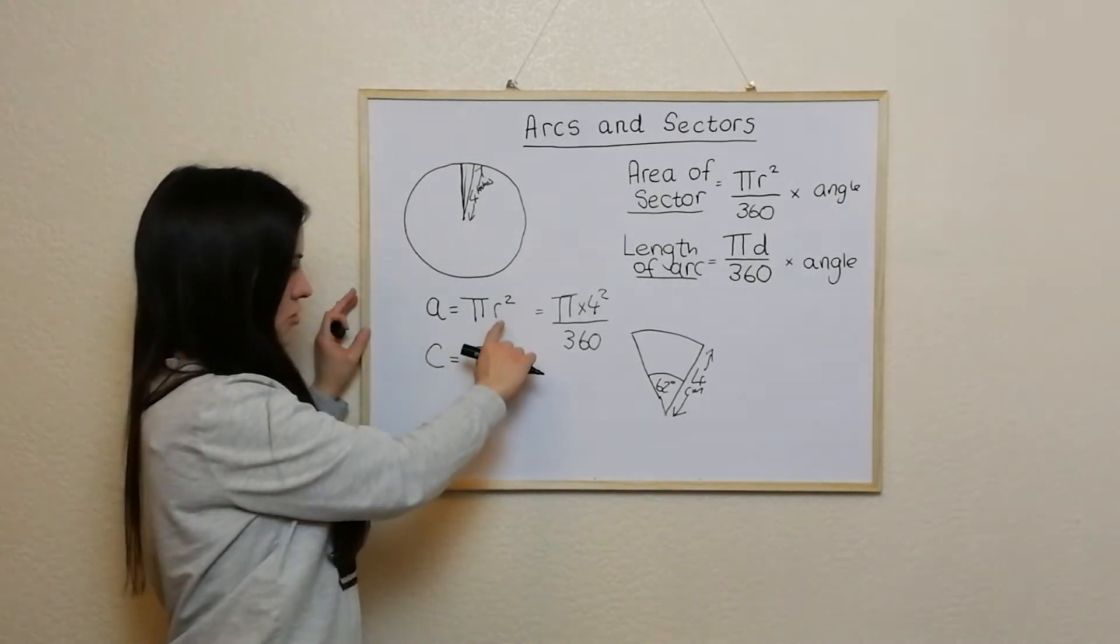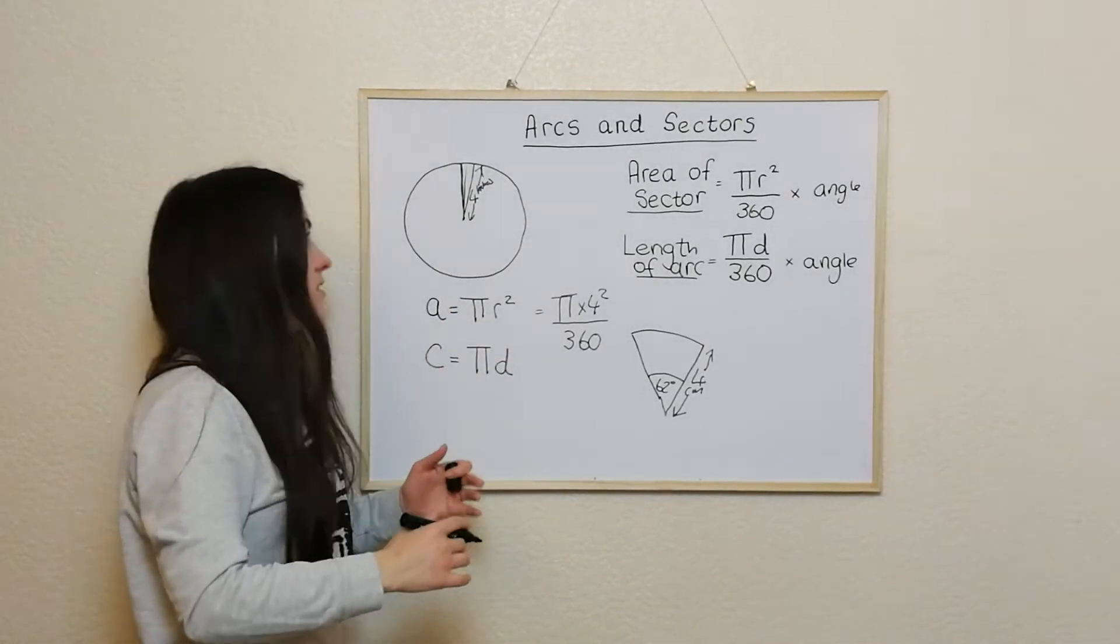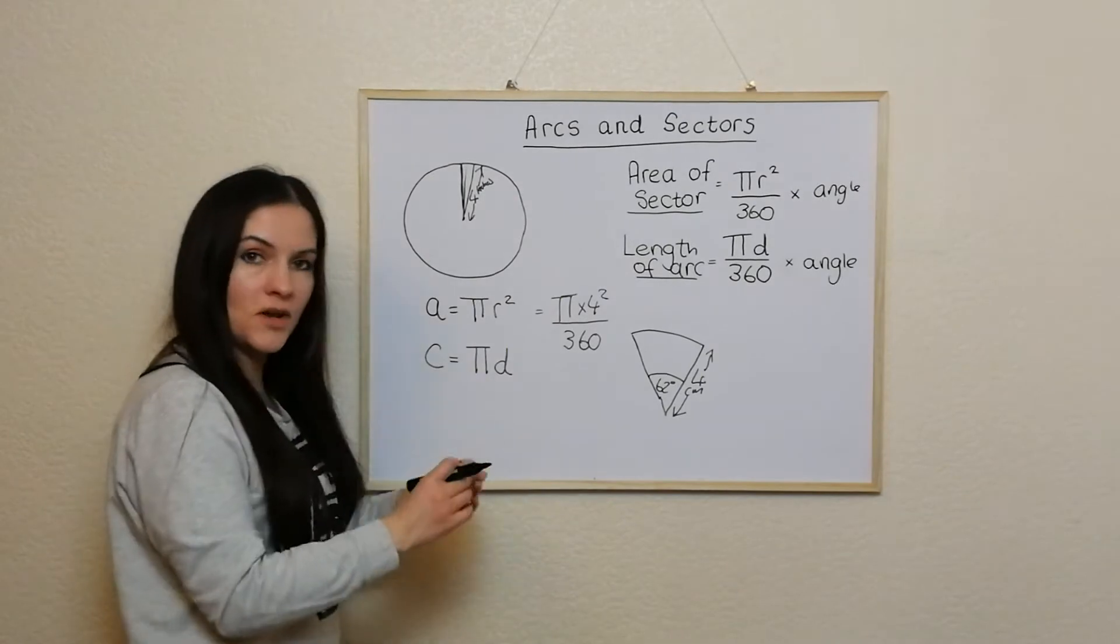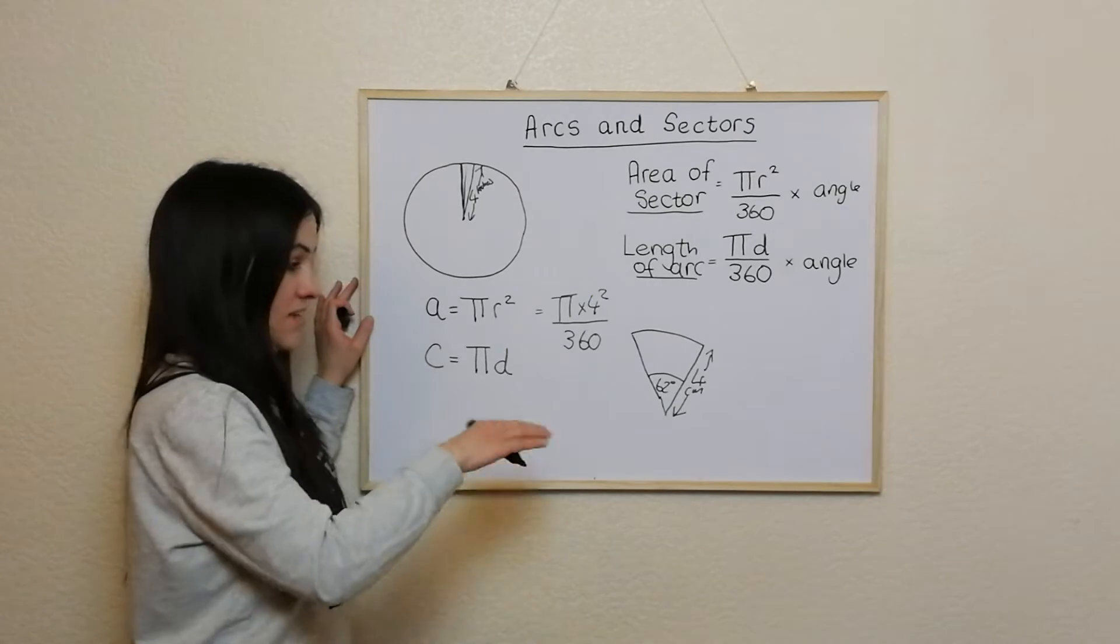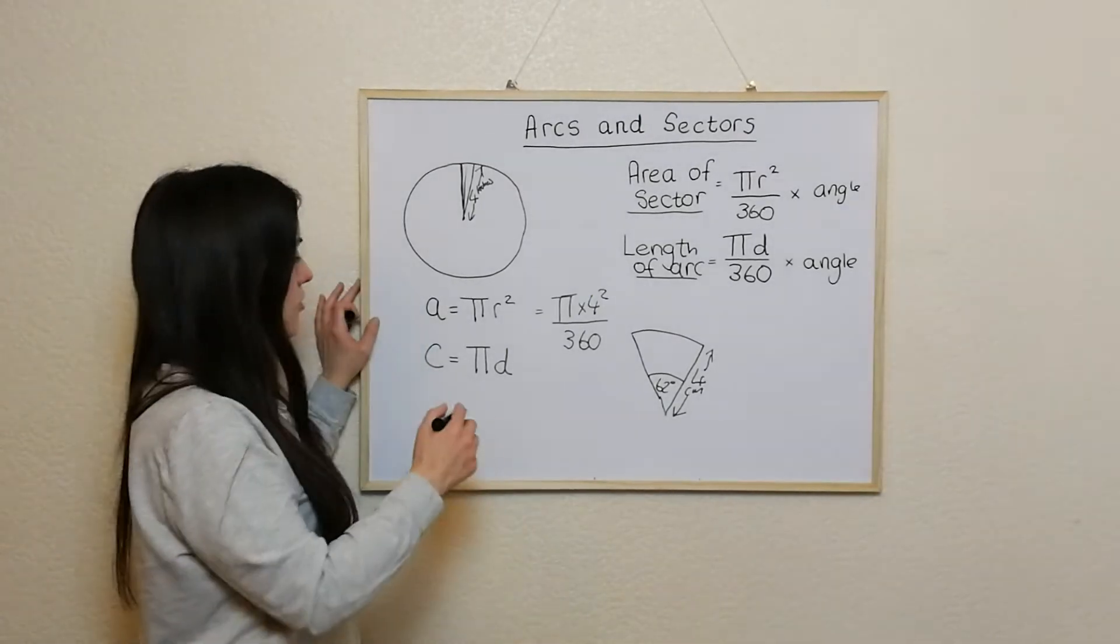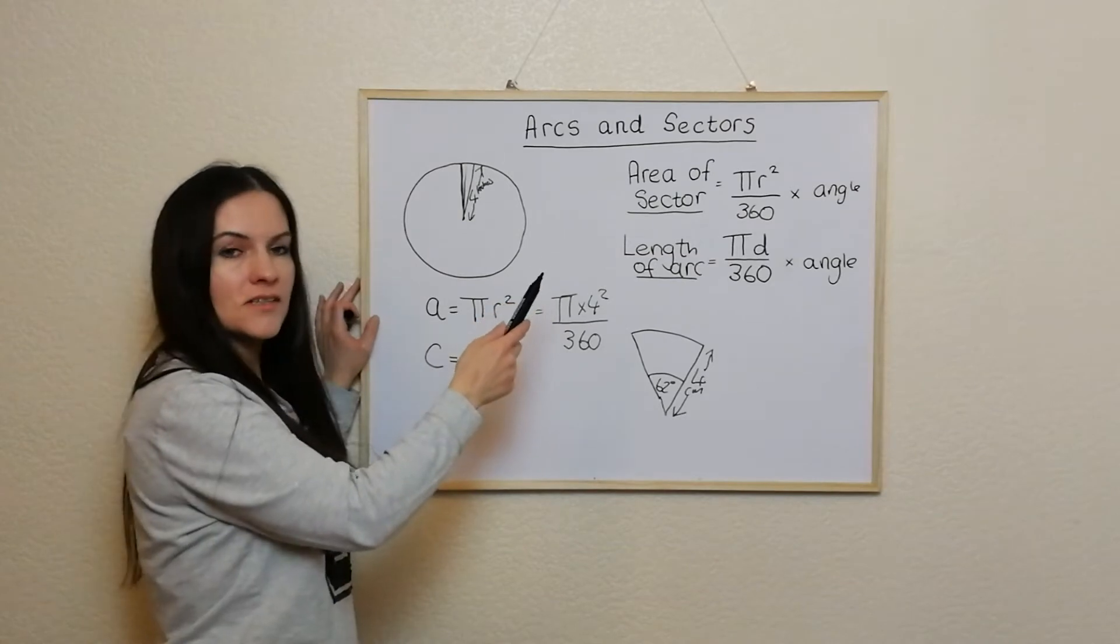So pi r squared to get the full thing, divide by 360 to get the area that's in one degree, and then times it by the angle to work out this segment that you're trying to get. Now this works for the length of arc and the area of sector.